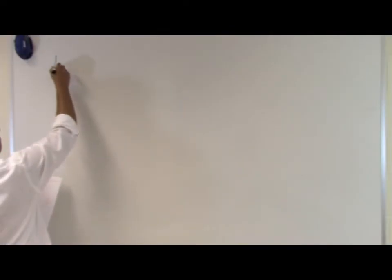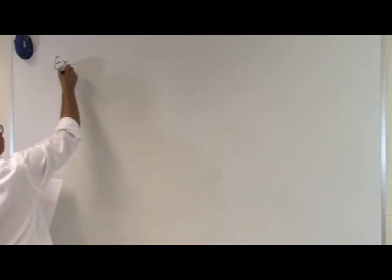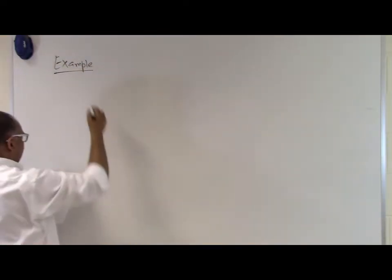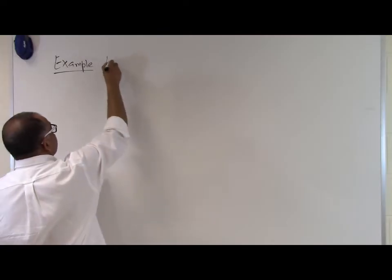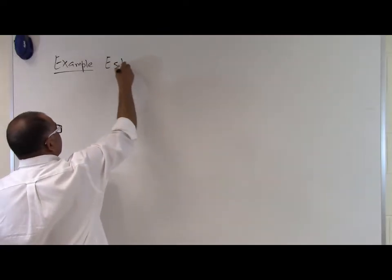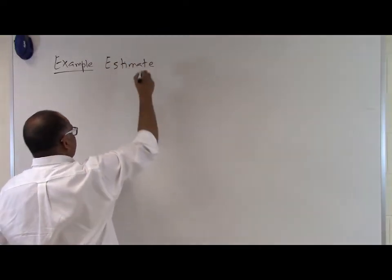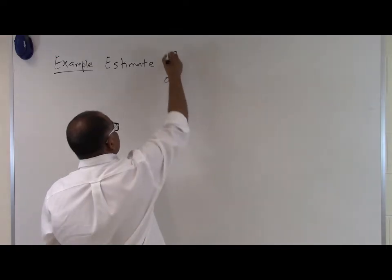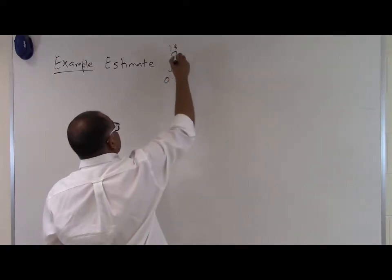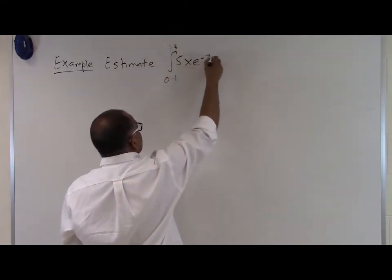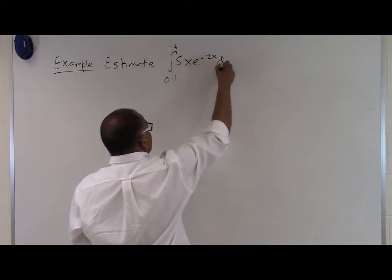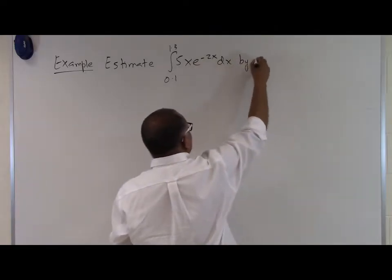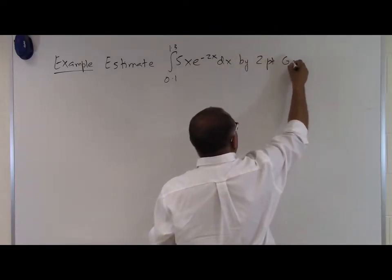We'll do an example of a two-point Gaussian quadrature rule. The example problem statement is: estimate this particular integral by a two-point Gaussian quadrature rule.